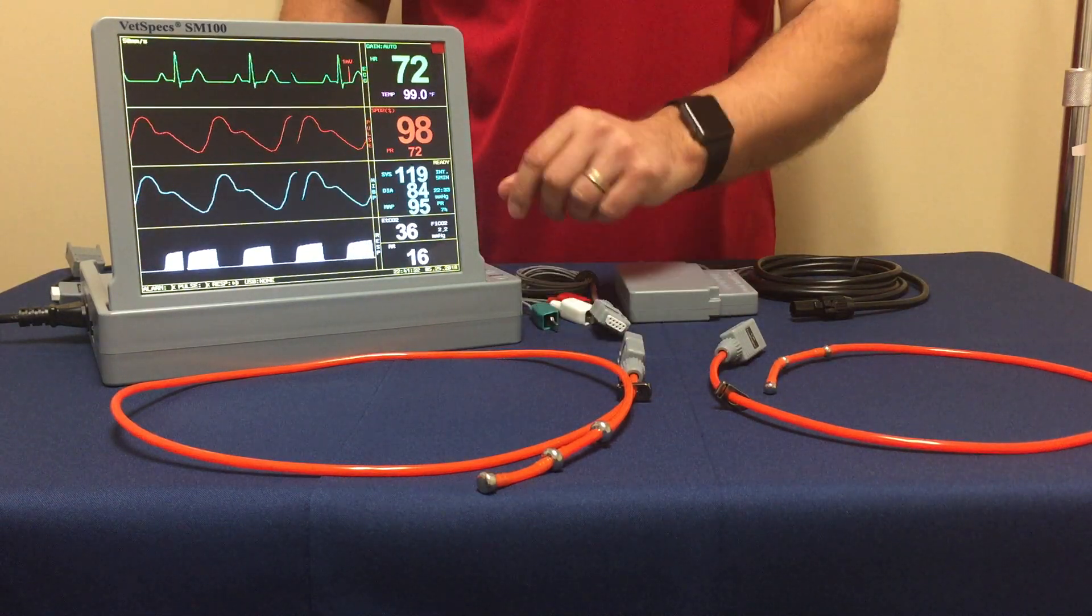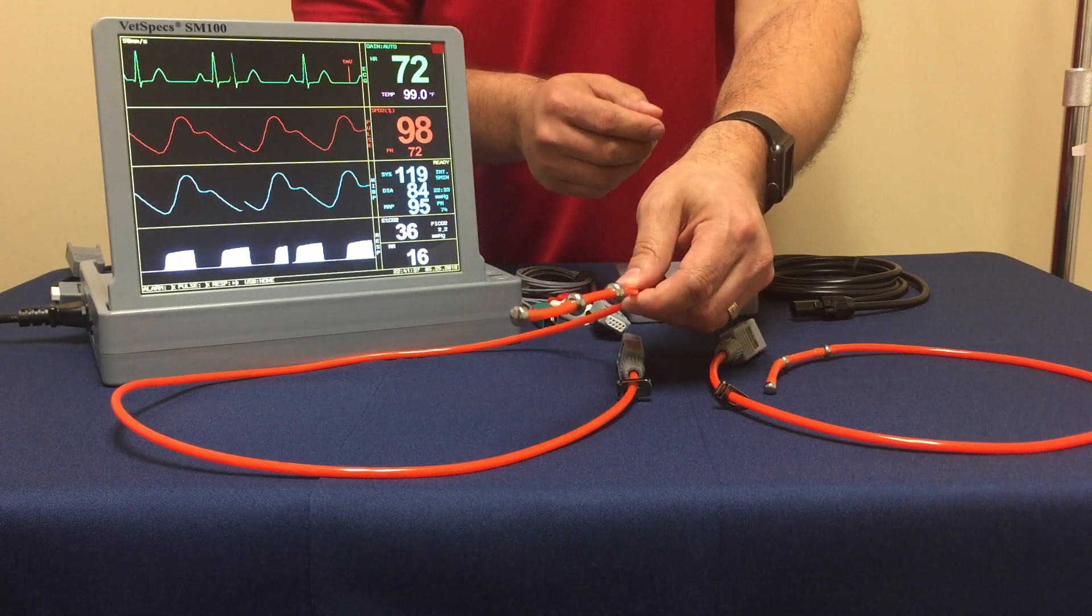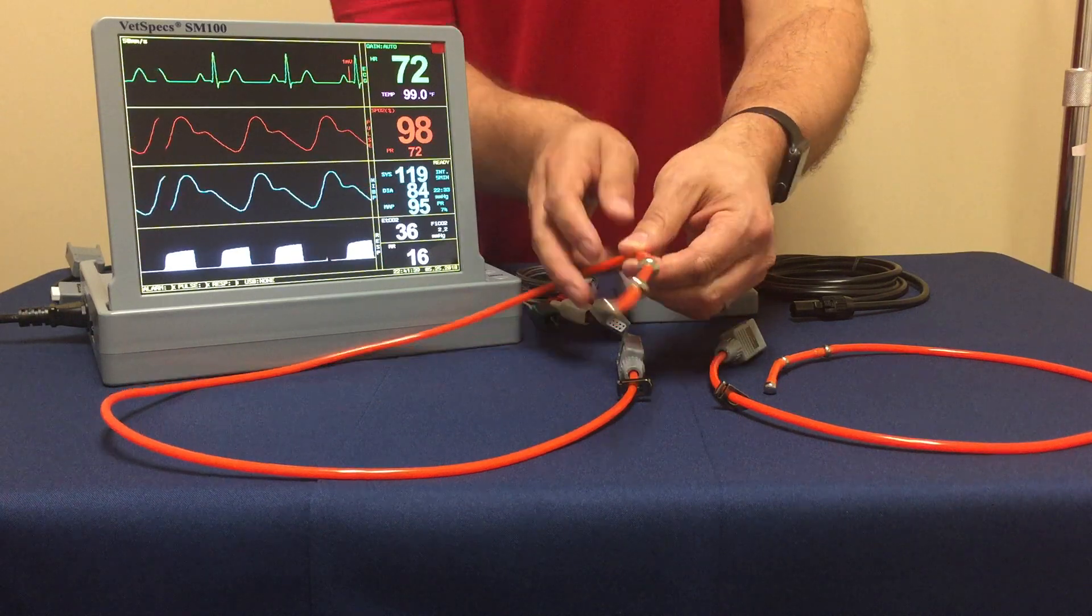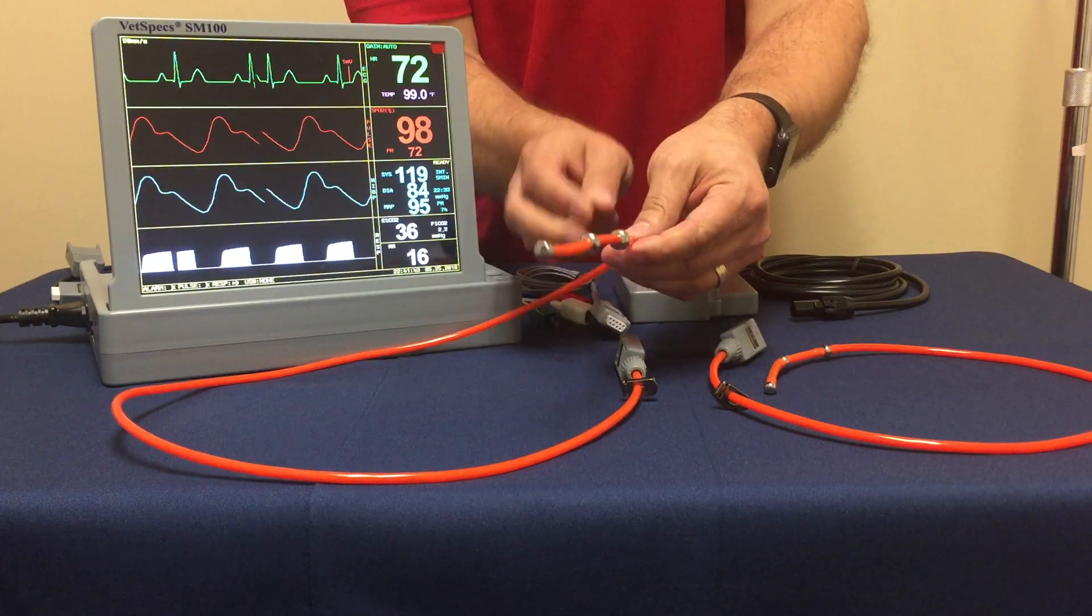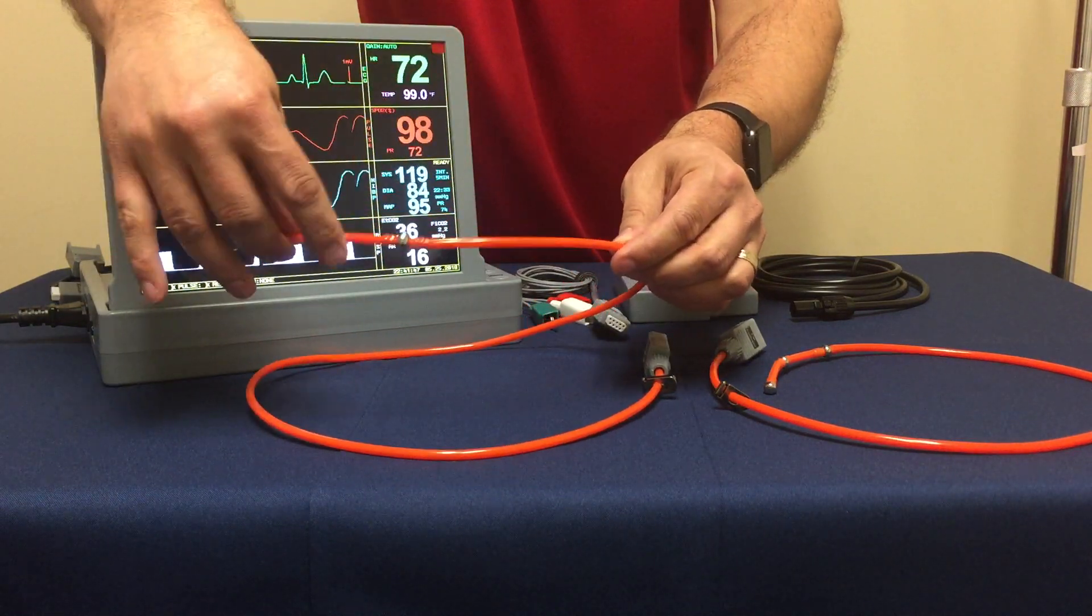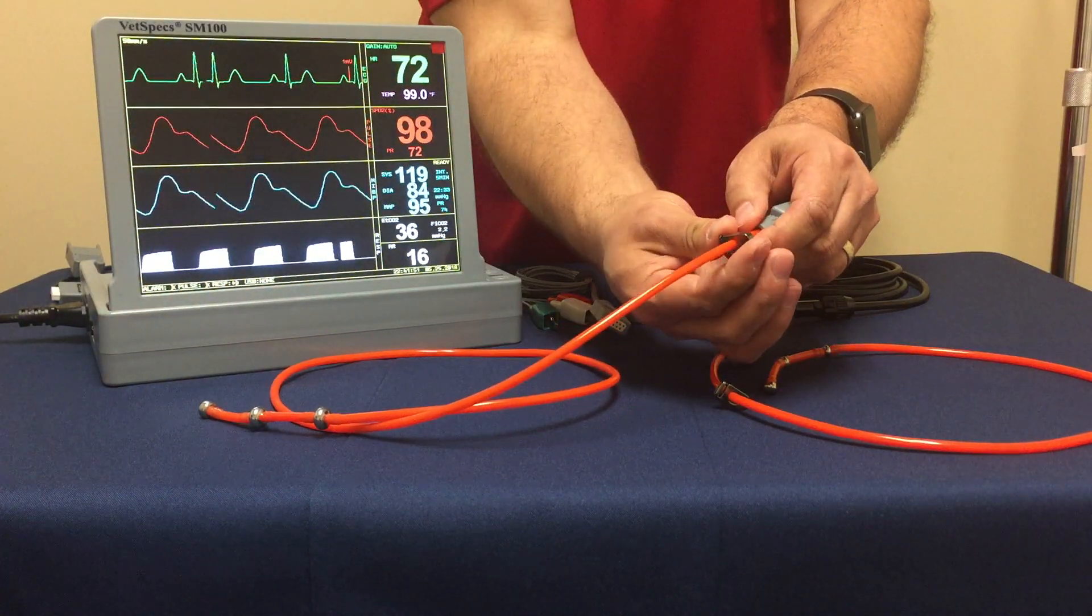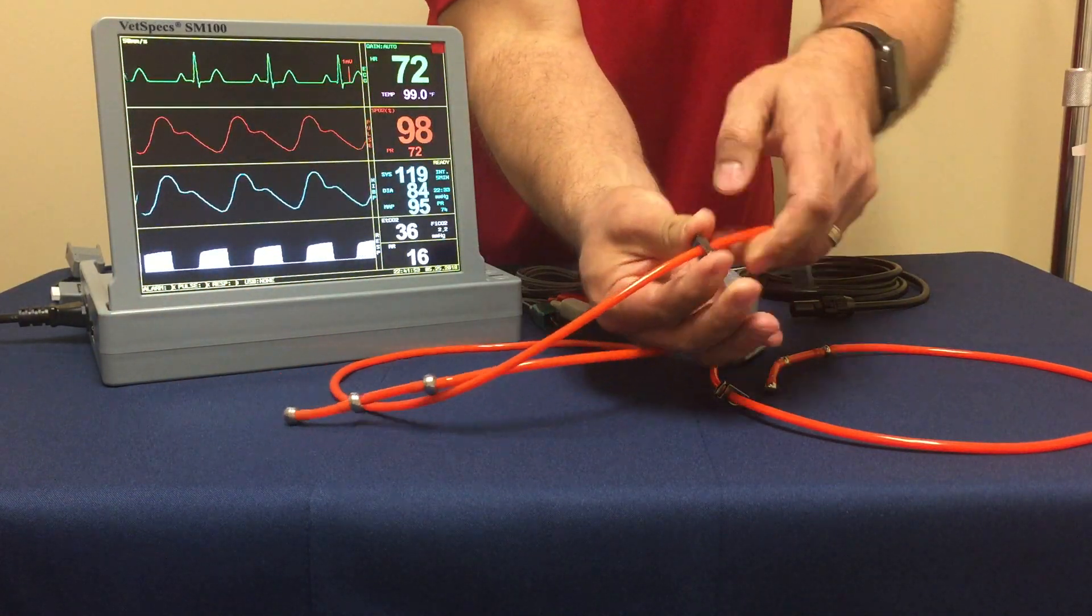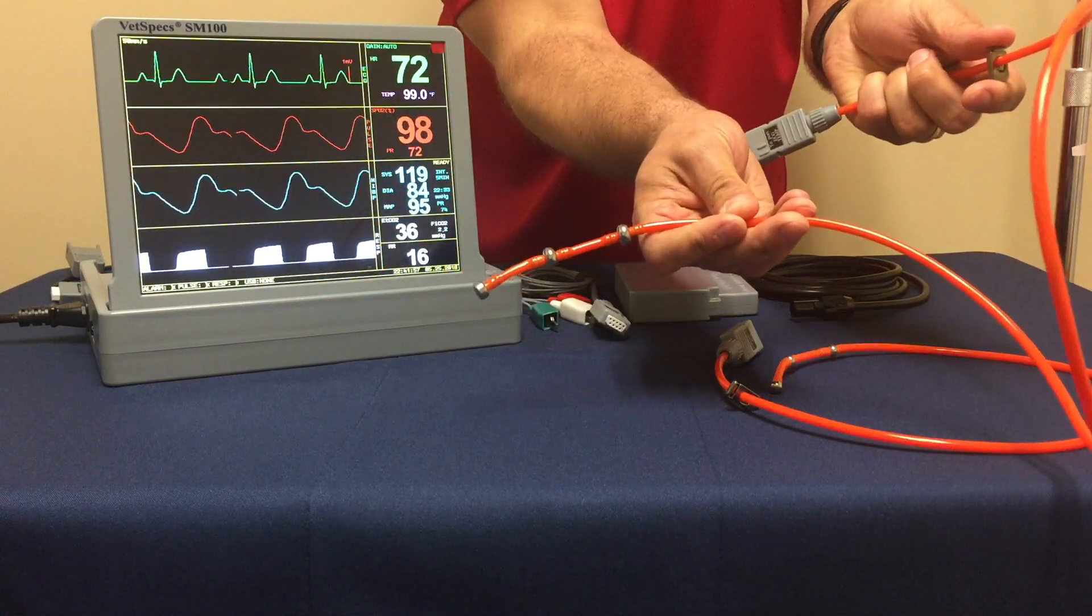For the esophageal probes, it's simply a matter of, for use in intubated patients traditionally for surgical use, just choose your probe based on the patient's size. Insert the probe into the esophagus so that the contacts are in line with the heart. VetSpecs has smartly included a little slide clip so that you can have a pre-measured depth to insert the probe so that you are at the desired depth.